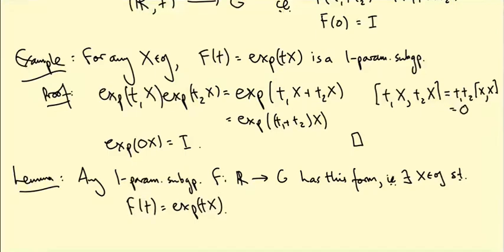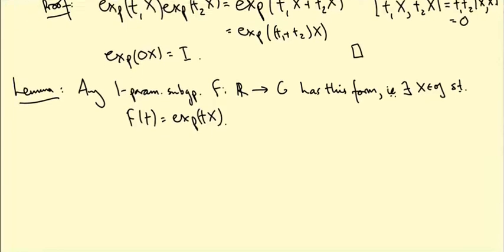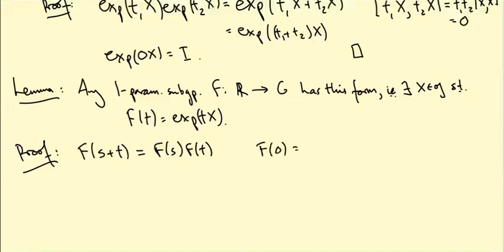Now this is actually going to be our first really non-trivial use of calculus. So let's prove this. What does it mean for F to be a homomorphism? It means that F(S + T) is F(S) times F(T), and it means that F(0) is the identity matrix.